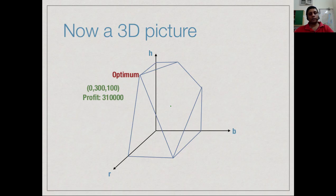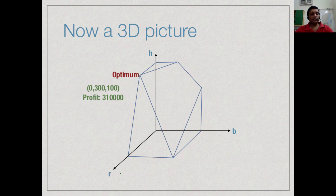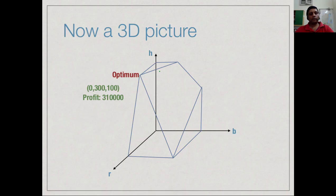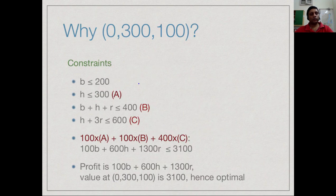In this case, if we draw this picture, it now becomes a three-dimensional geometric object because we have three axes: b, h and now r coming out in the vertical direction. The constraints now instead of lines, they become these planes. So instead of a polygon, we have what is called a polytope - a three-dimensional object. Again, we will find that you get the optimum at some corner. The optimum happens to be in this case that you make 0 barfis, you make the full amount 300 halwa and then you make the rest into rasmalai.